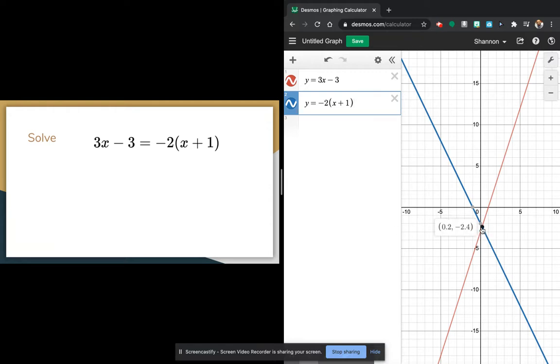You can click on the point where they cross, and notice they cross at 0.2. Negative 2.4 is the y value. So when the y value equals negative 2.4, you have an x value of 0.2, and that's when they're equal.